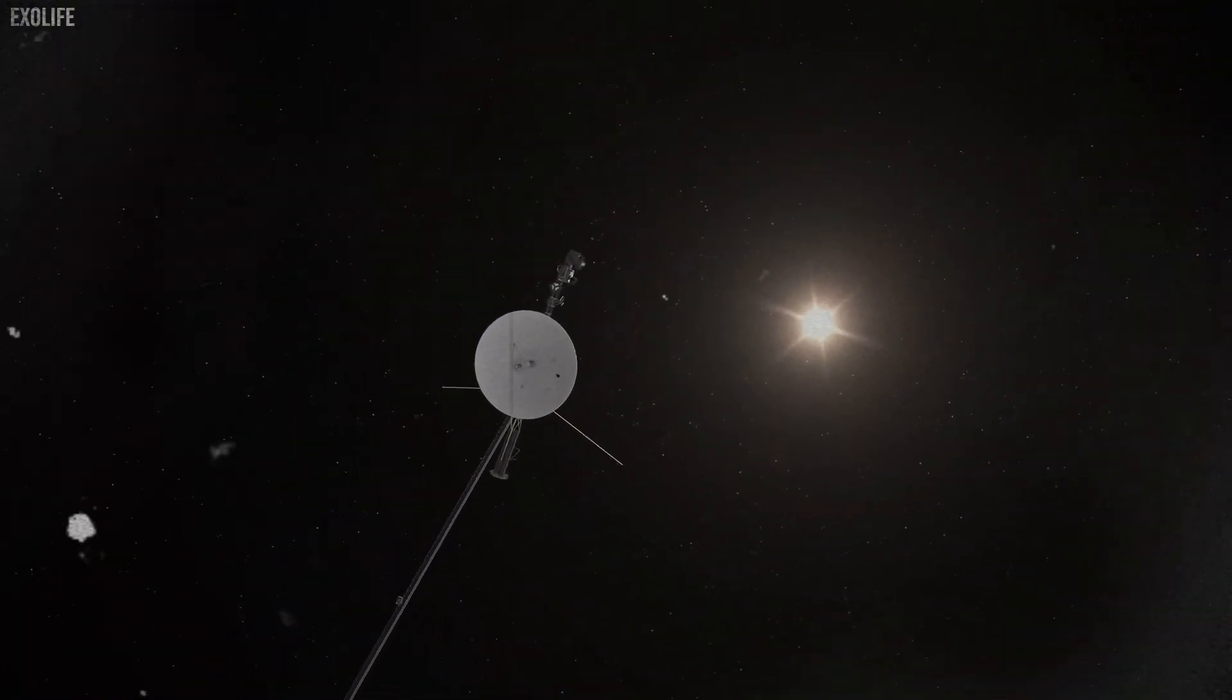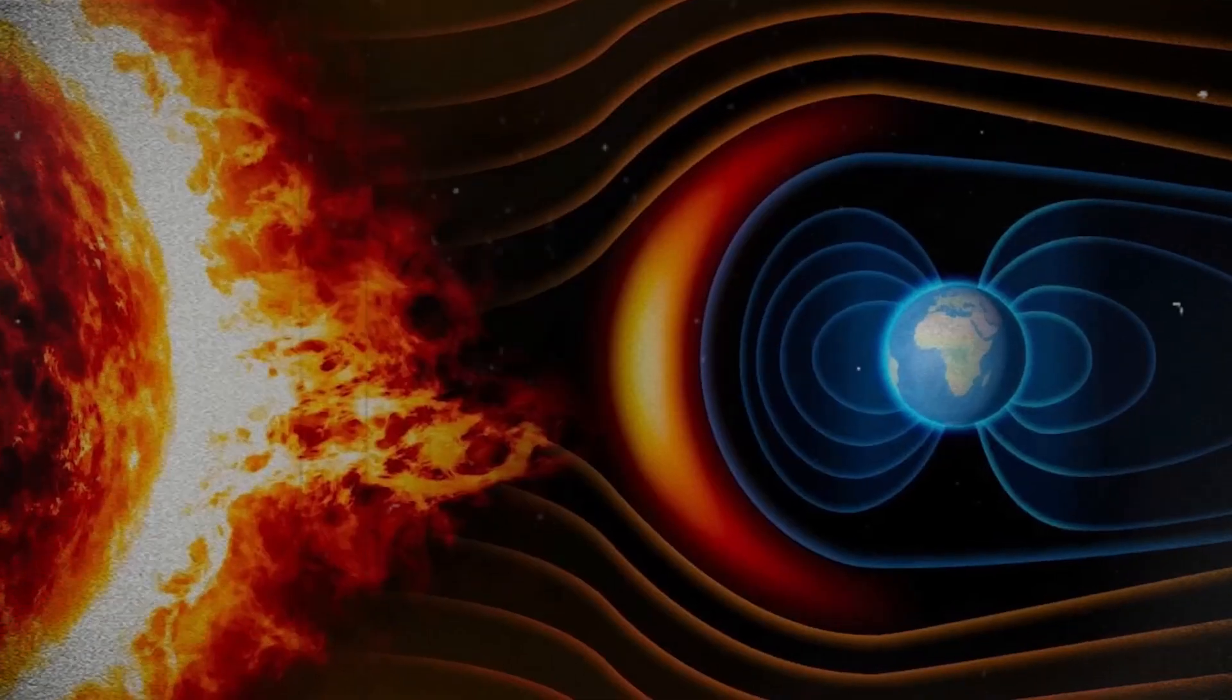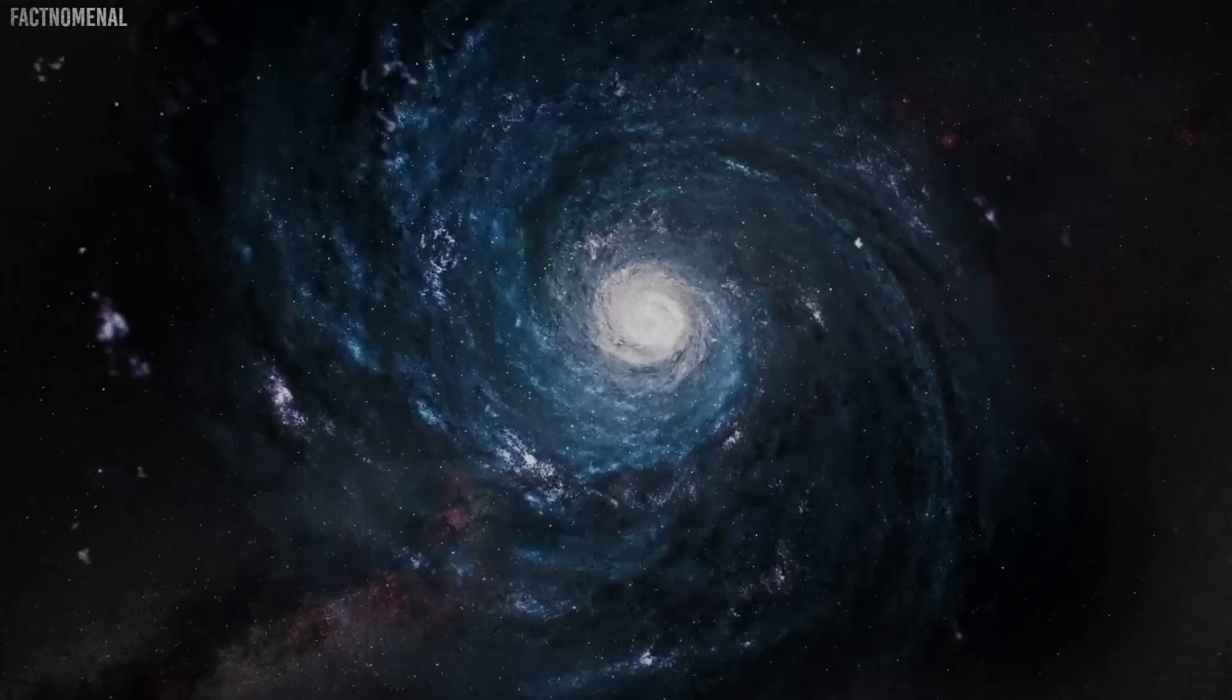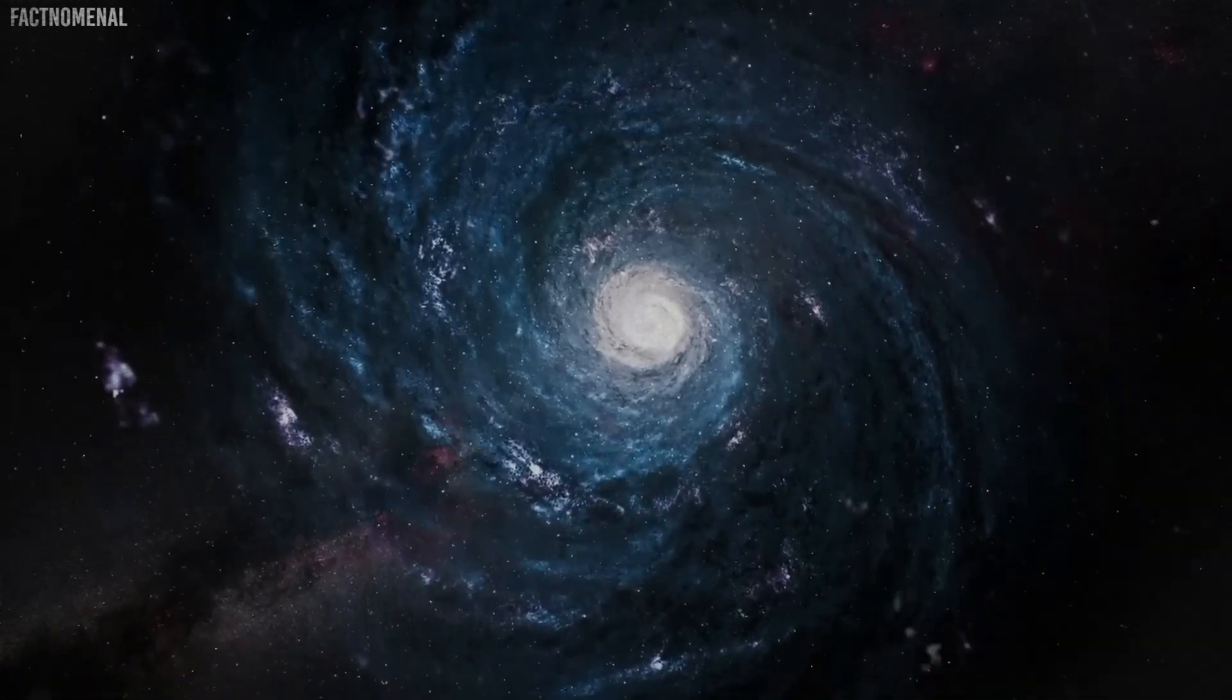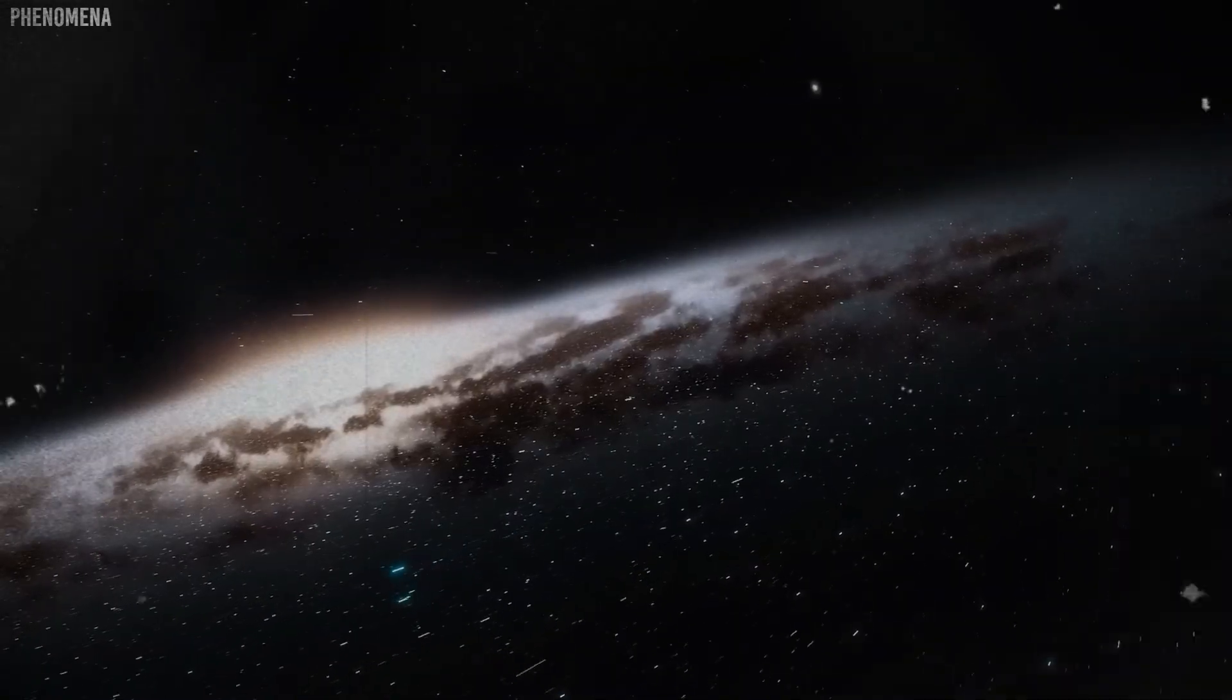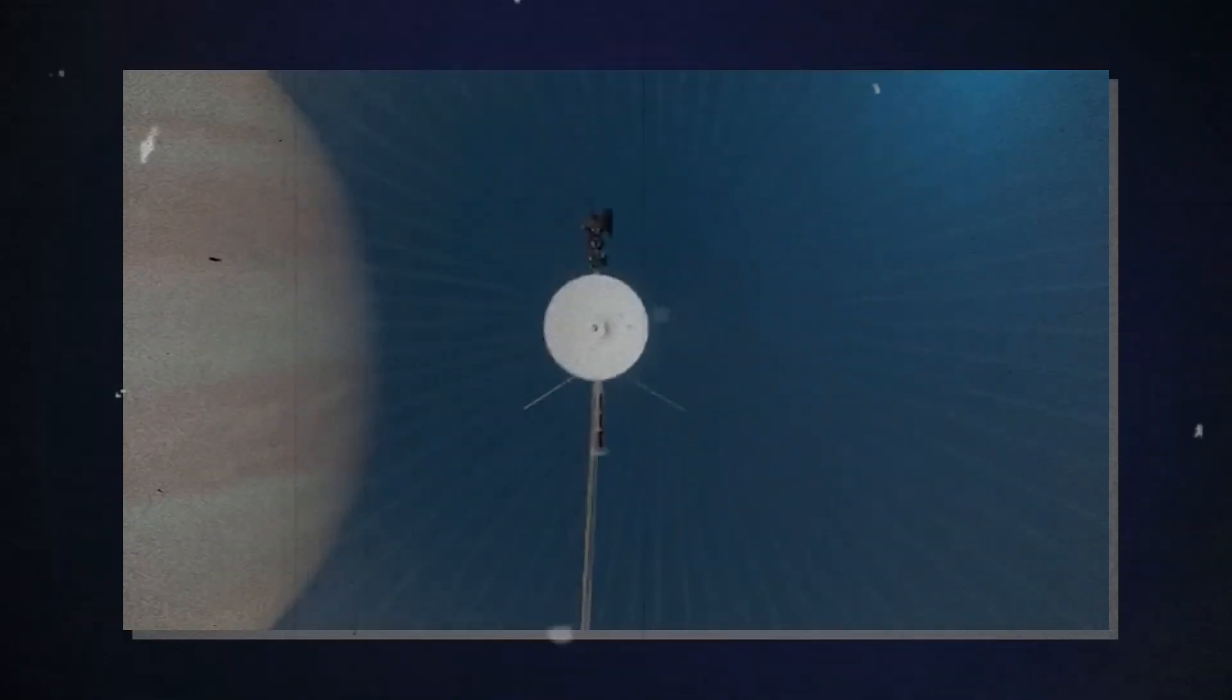Besides the massive 230-foot dishes, each location also has antennas of various other sizes. Together, they form a worldwide communication system designed to talk with spacecraft far beyond Jupiter. Thanks to these giant antennas, we can continue sending commands and receiving data from Voyager.